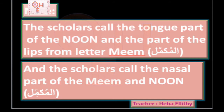We call the articulation part here al-guz'il-mukammal, and the nasal passage we also call al-guz'il-mukammal. Al-mukammal means 'continues'. So the nasal passage continues the sound of noon — same thing with meem: the nasal passage continues the sound of meem. The lips is also called al-guz'il-mukammal. Scholars tell us that the tongue part of meem and noon is called al-mukammal, and the nasal part of meem and noon is also called al-mukammal.